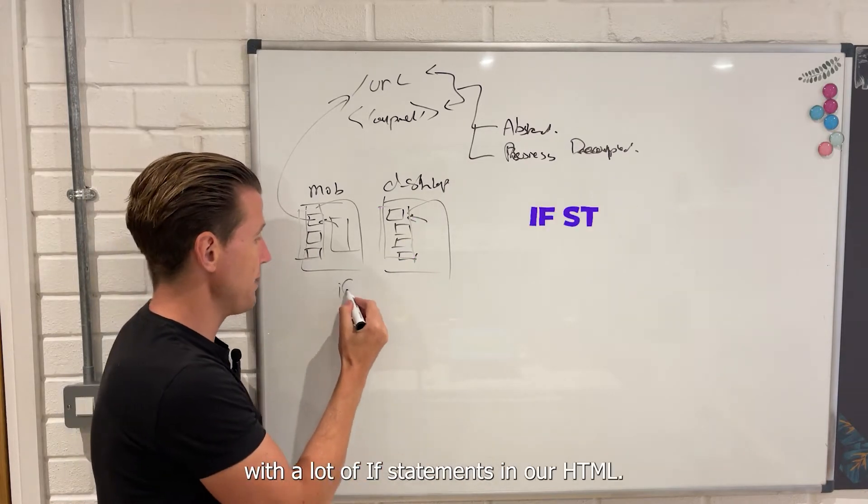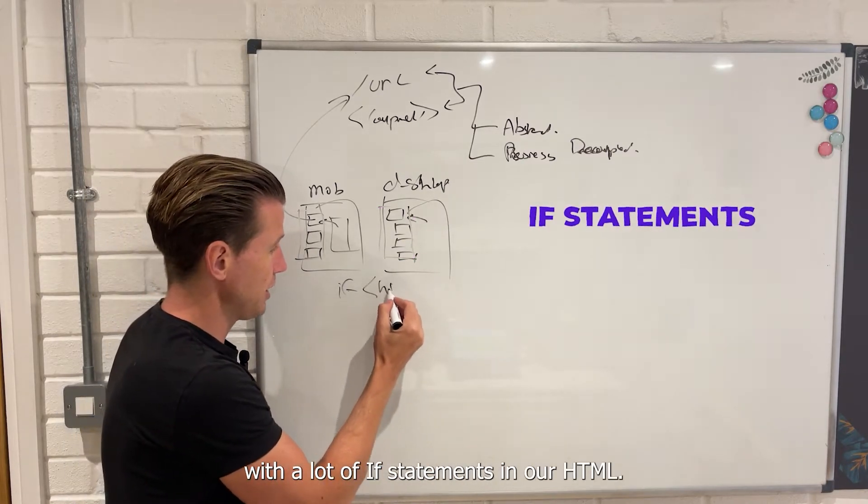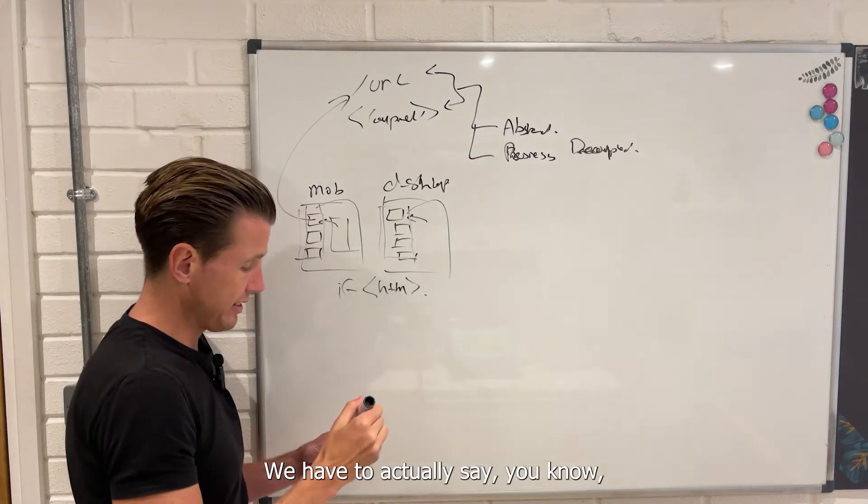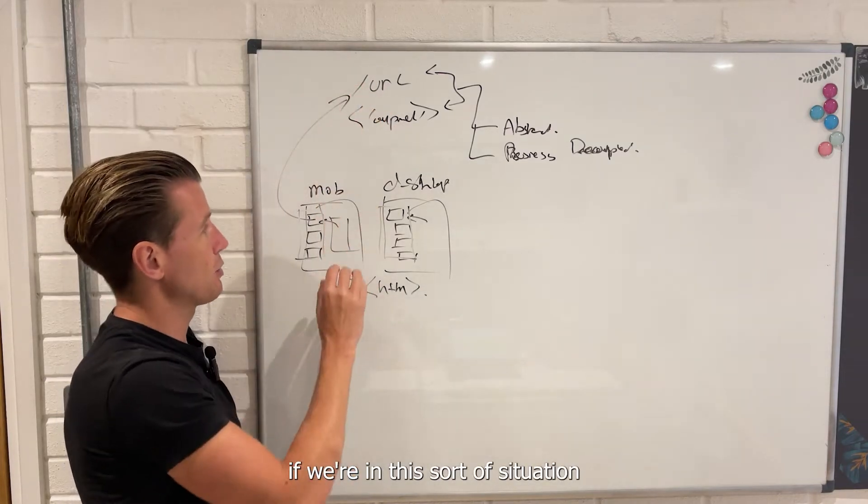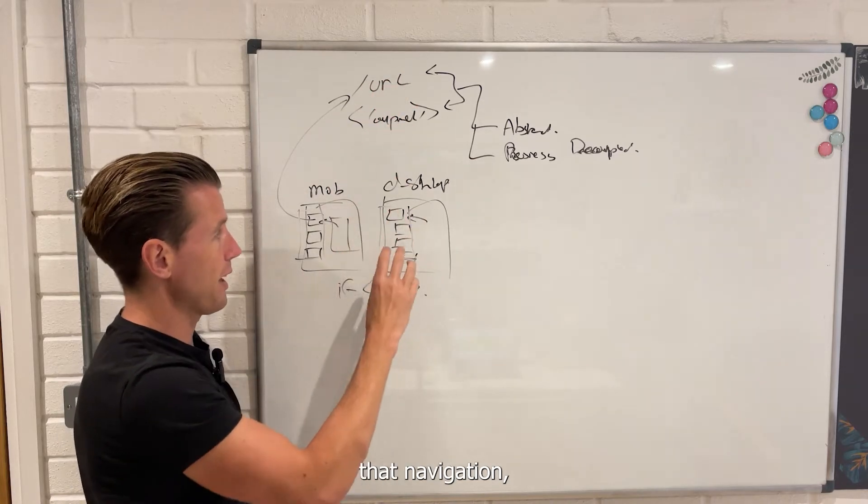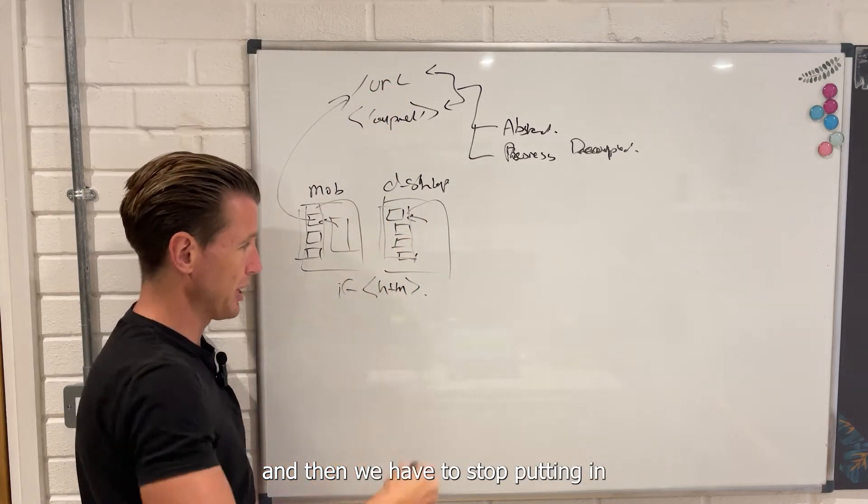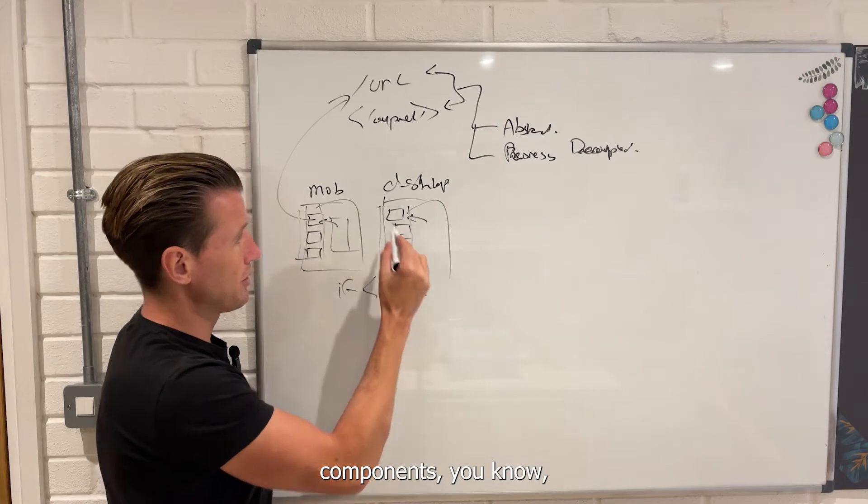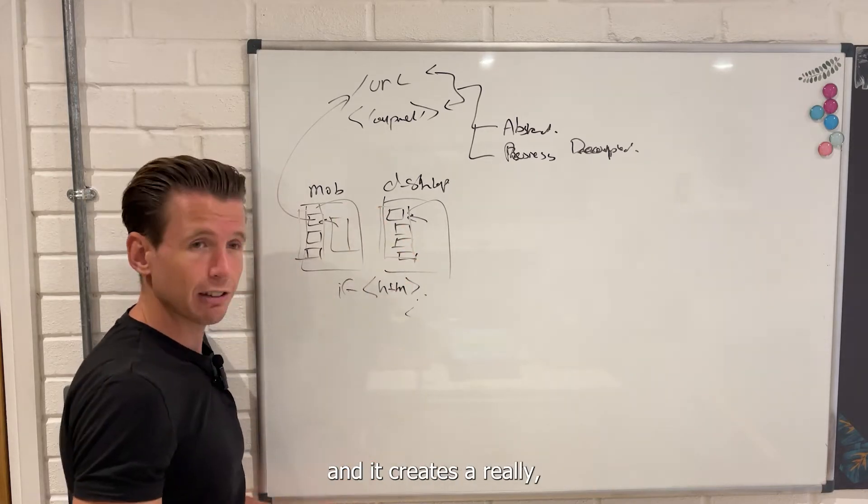So what we end up doing is we end up building separate navigation systems for desktop and separate navigation systems for mobile. That means we end up with a lot of if statements in our HTML. We have to say if we're in this situation, then show this navigation, if we're in this situation, show that navigation. And then we have to start putting in different types of components to show on different things, and it creates a really big burly mess.